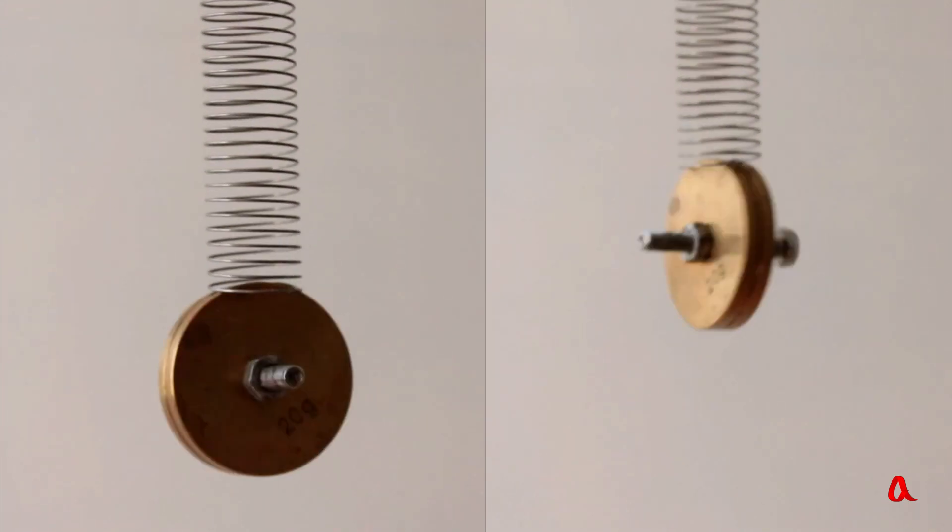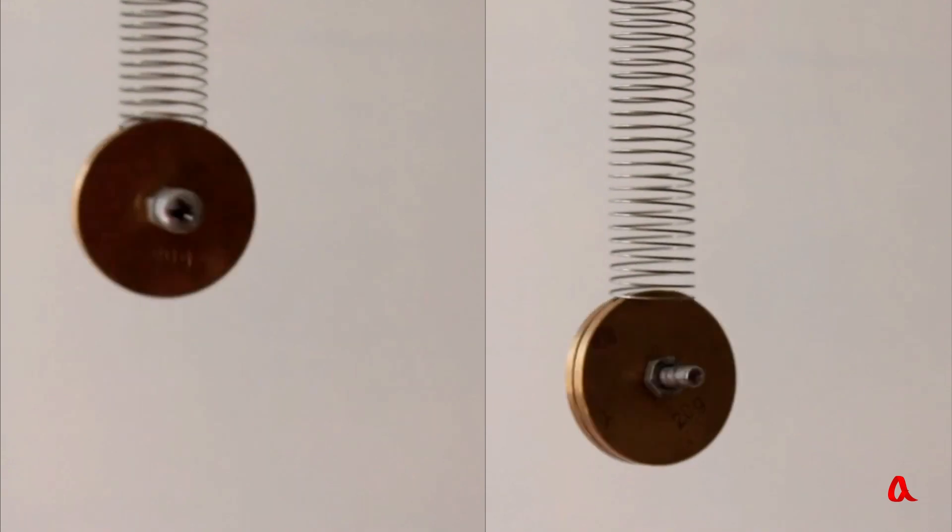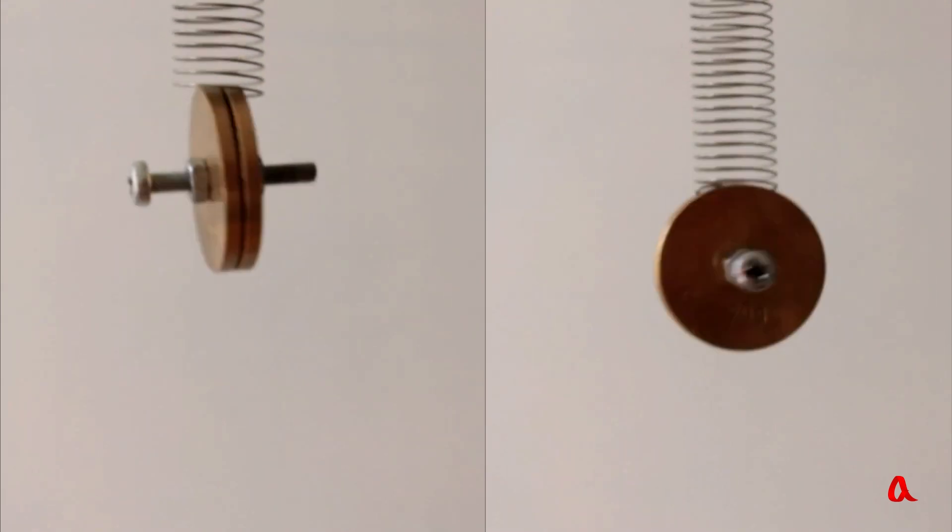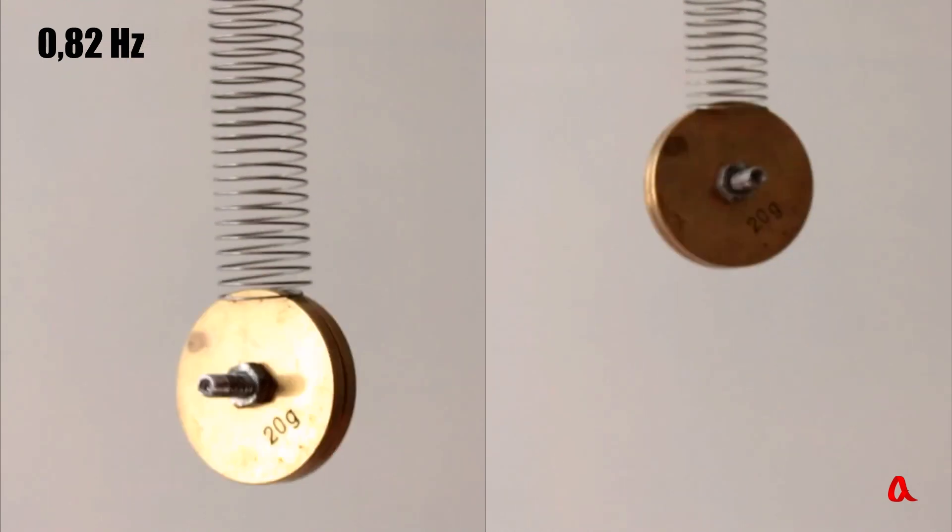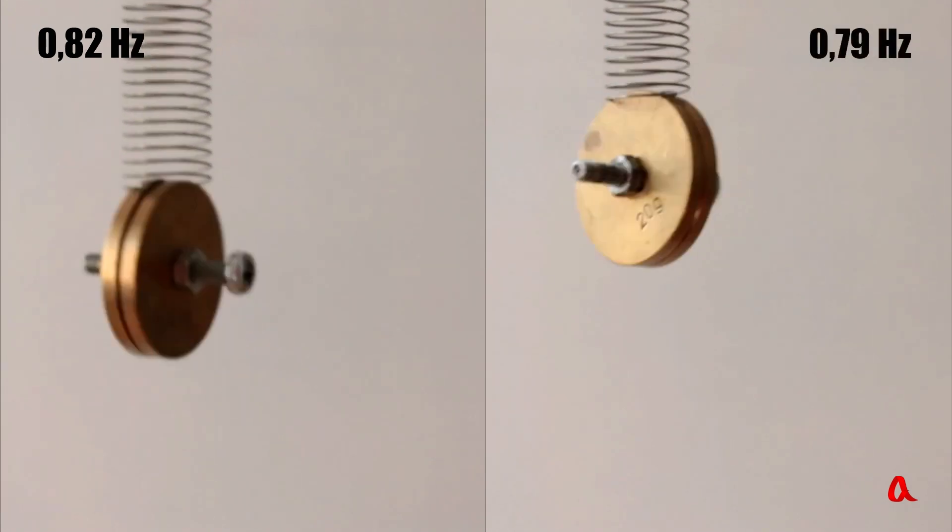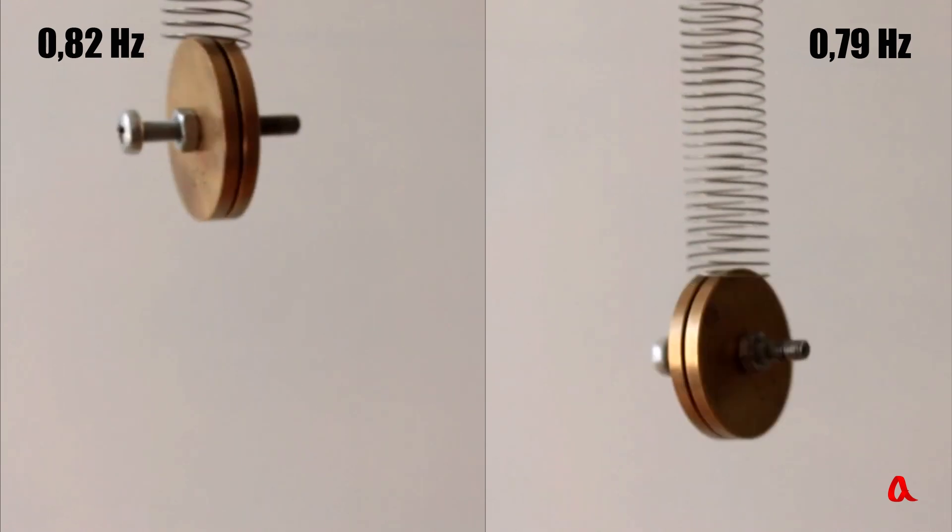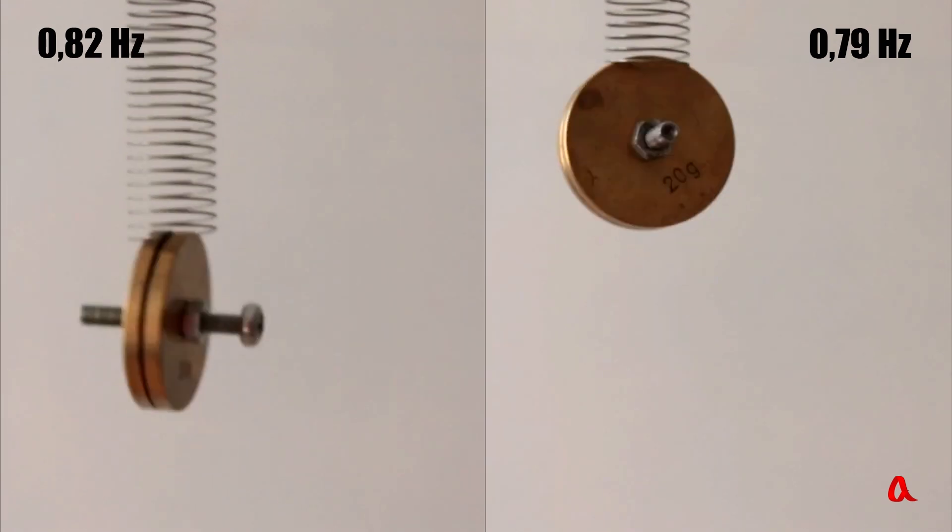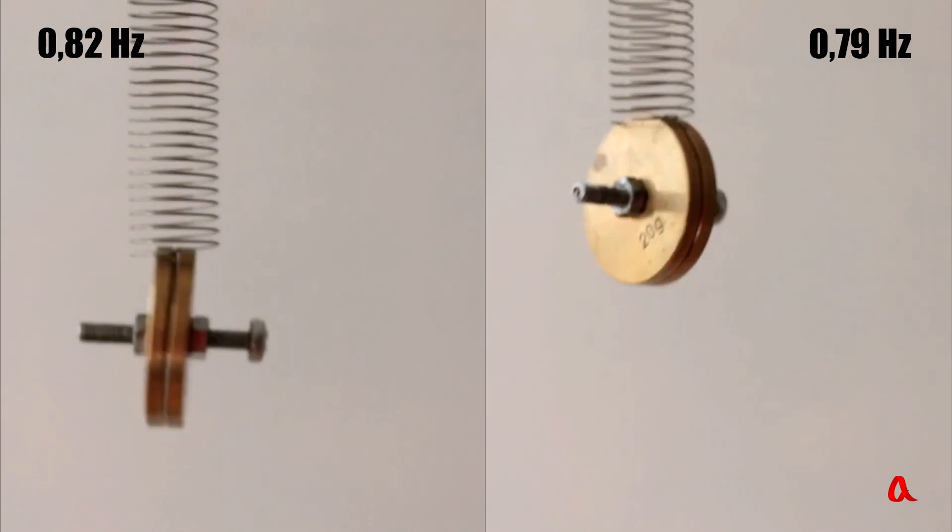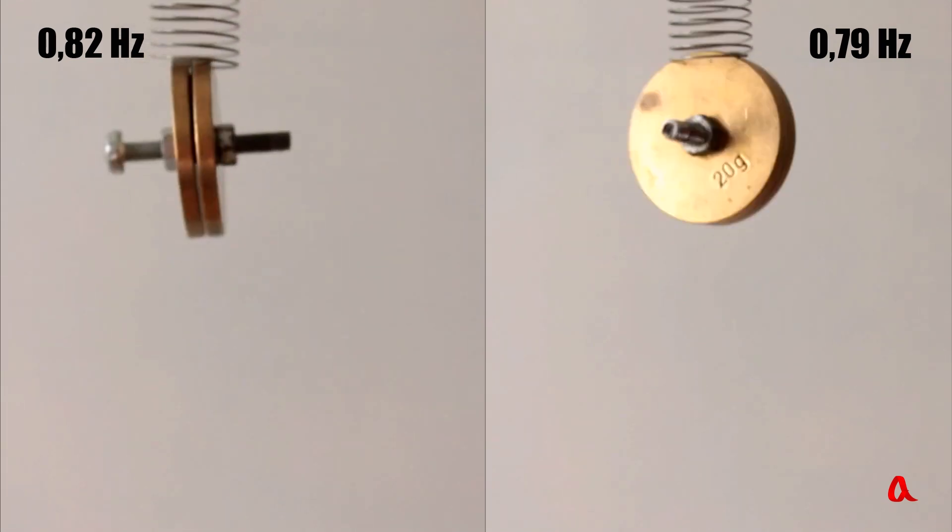Their frequencies are slightly different. The frequency of the left-handed oscillation, the harsher one, is 0.82 Hz. And the frequency of the right-handed oscillation is 0.79 Hz, which is slightly less. And the difference between these frequencies is 0.03 Hz, which corresponds to a period of 33 seconds.